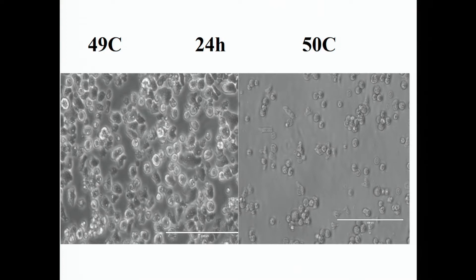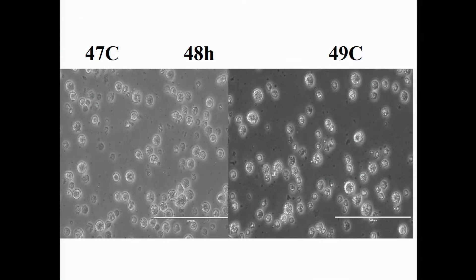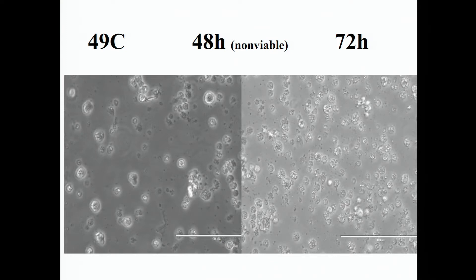At 49°C for 24 hours, some are dying — undergoing what appears to be apoptosis — but they are still present. At 50°C at 24 hours, amoeboid forms are still visible and viable, though most have encysted. At 48 hours at 49°C, they become non-viable. At 72 hours, they're all disintegrating. Temperature plays a very important role in the viability of these amoeba. At 52°C, they die right away — immediately non-viable.